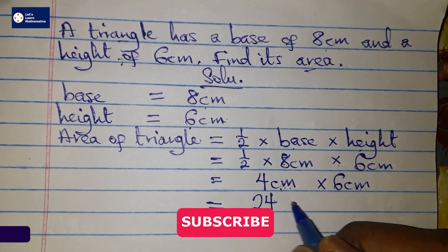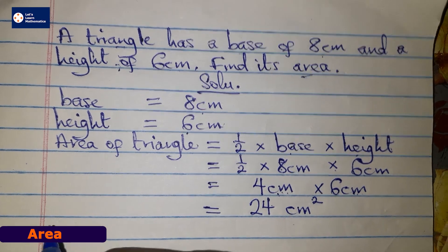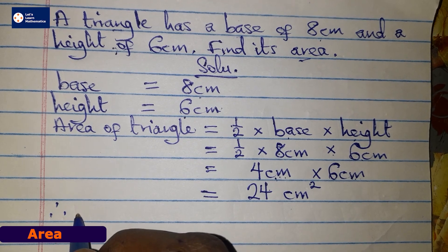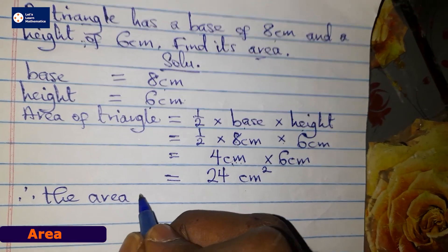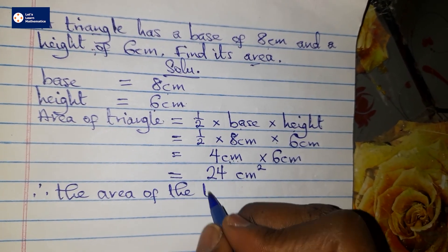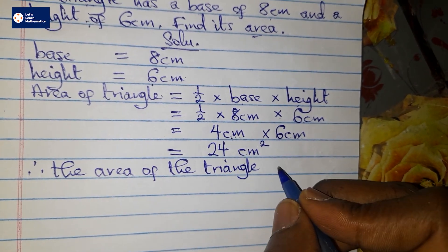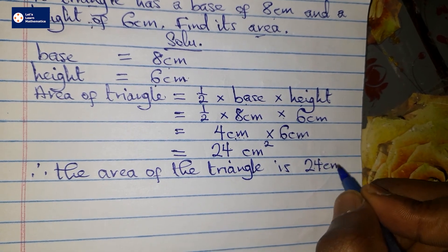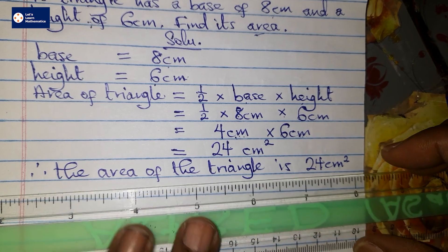Then you finalize it and say that therefore, the area of the triangle is 24 centimeters squared. Then you underline it nicely.